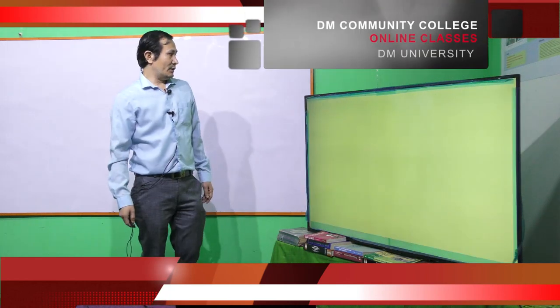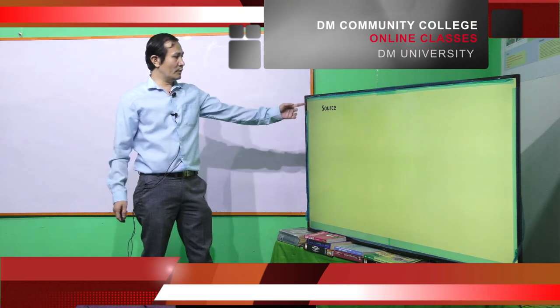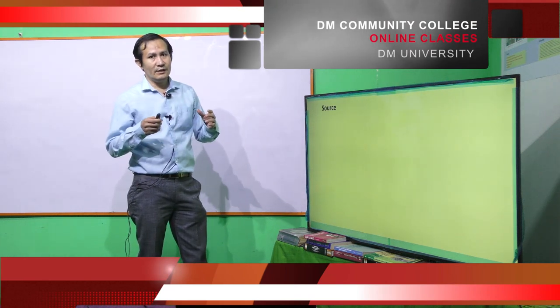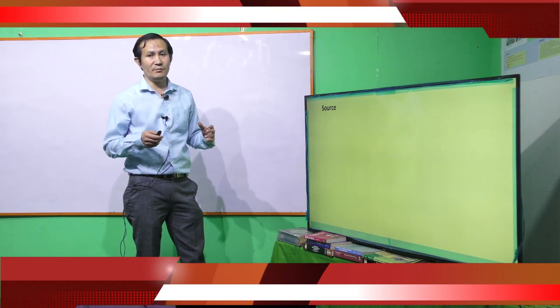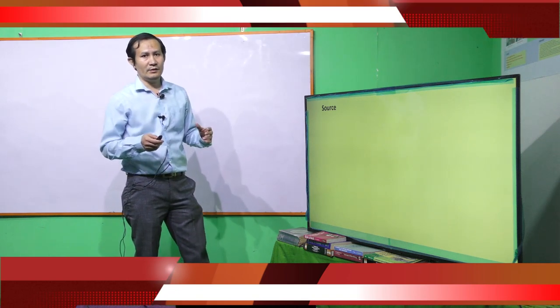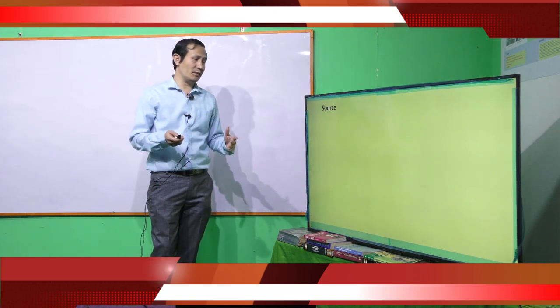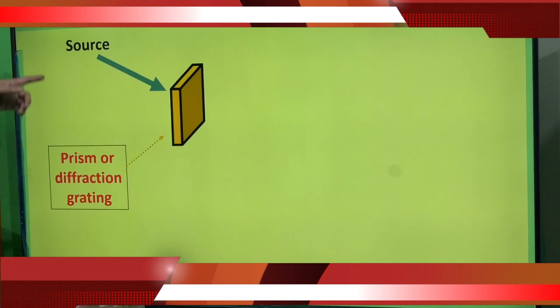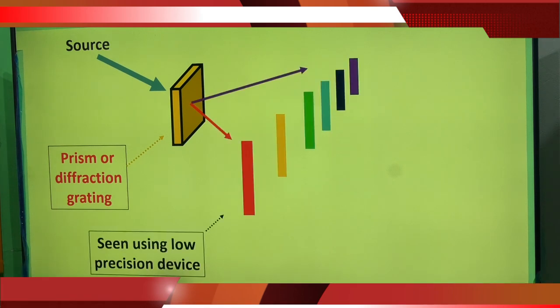So, let's start. There is a source. In this source, we are considering there are gaseous atoms. These gaseous atoms emit light. The emitted light is allowed to pass through a slit, which I have not shown here. The light that passes after the slit is represented by the blue line. This light is allowed to fall on a prism or a diffraction grating. After that, you will see spectral lines on a photographic film, or using a telescope.